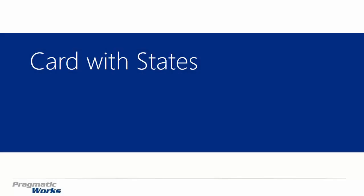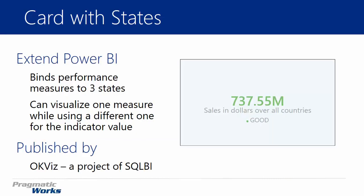Hi and welcome back. In this session we're going to be looking at the Card with States. It's really based off of the traditional Power BI built-in card, but gives you some additional features that you can't do with a traditional card. It almost has a combination of a card and a KPI in one. You can actually bind different performance measures, and through three different states — positive, negative, or an in-between medium state — you can bring in data to identify whether a metric is meeting your requirements.